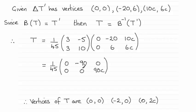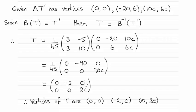So if you take 1/45 of each of those elements, you end up with 0, 0, -2, 0, 0, 2C. These columns represent the coordinates of the vertices of triangle T.